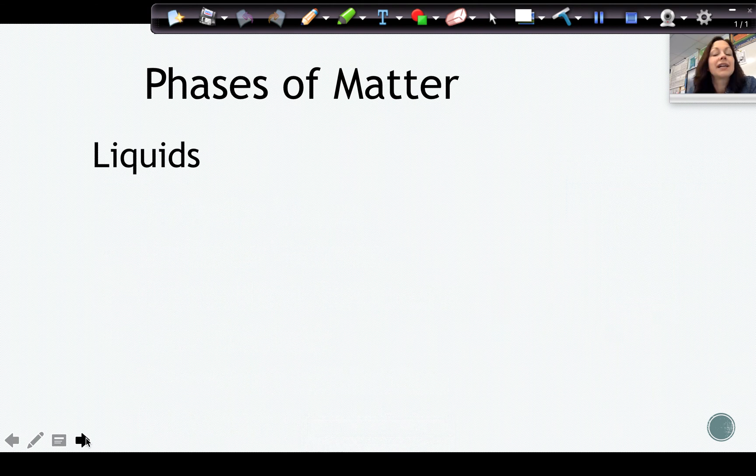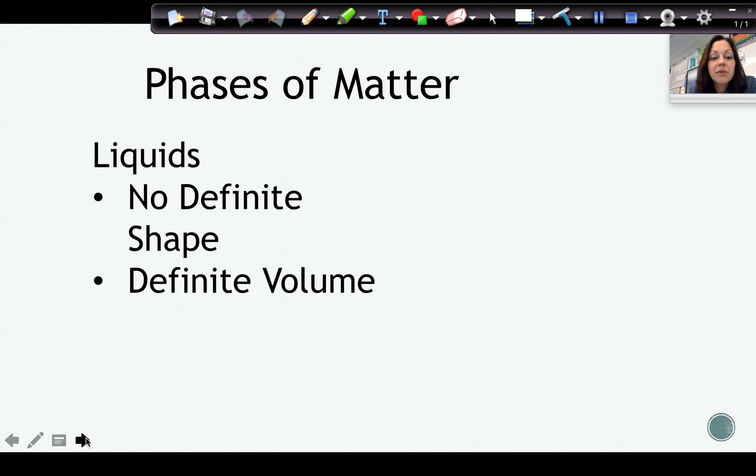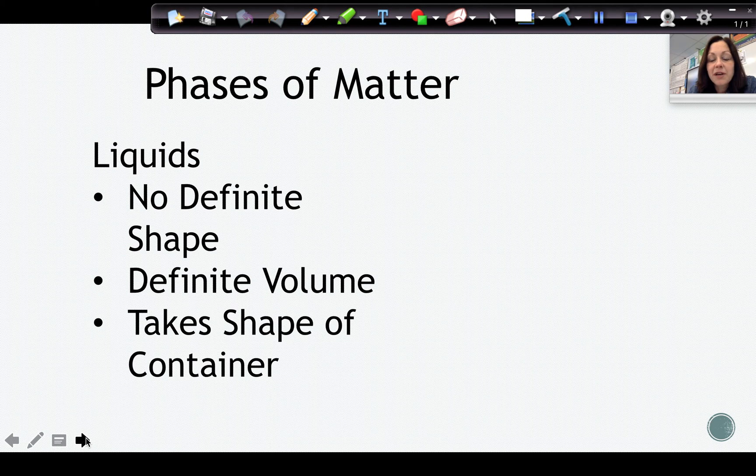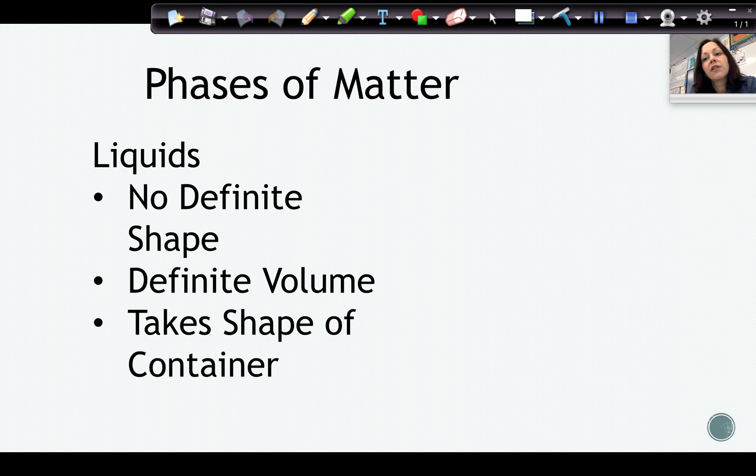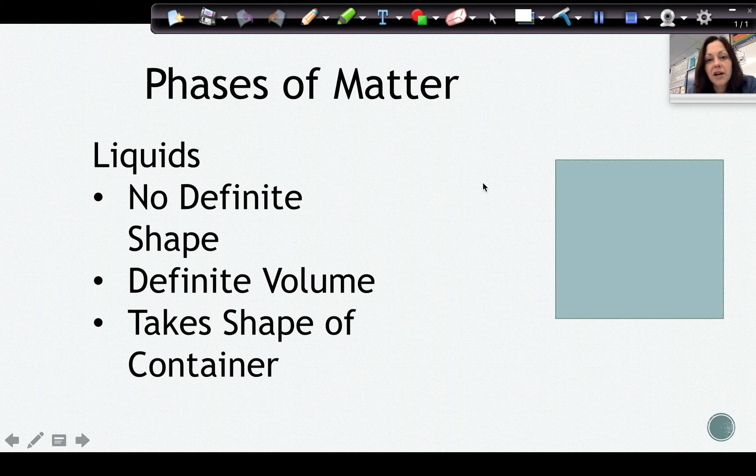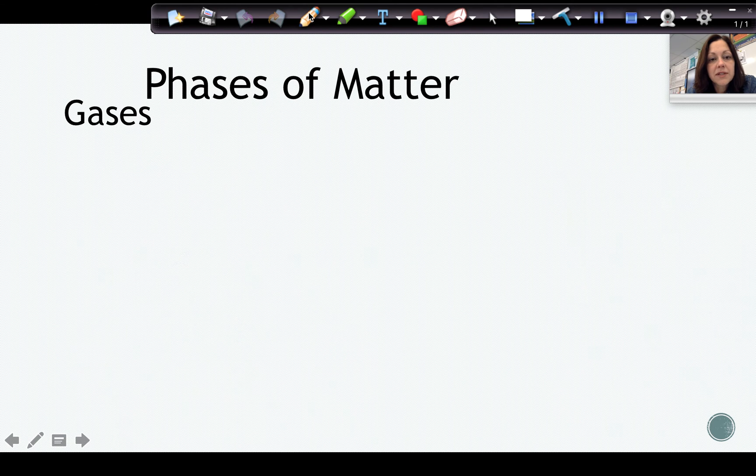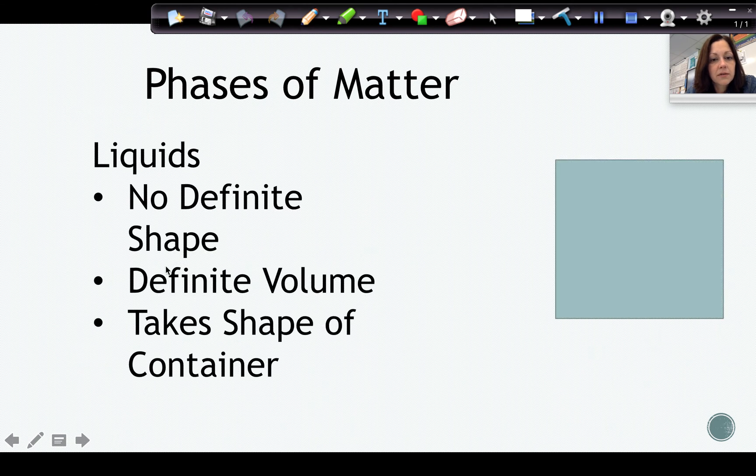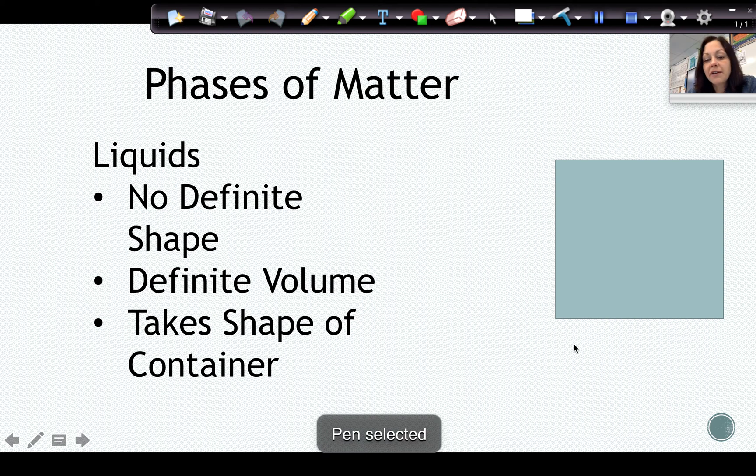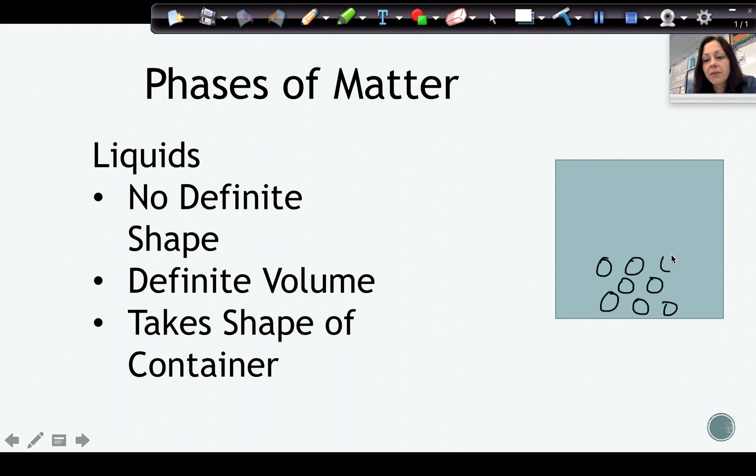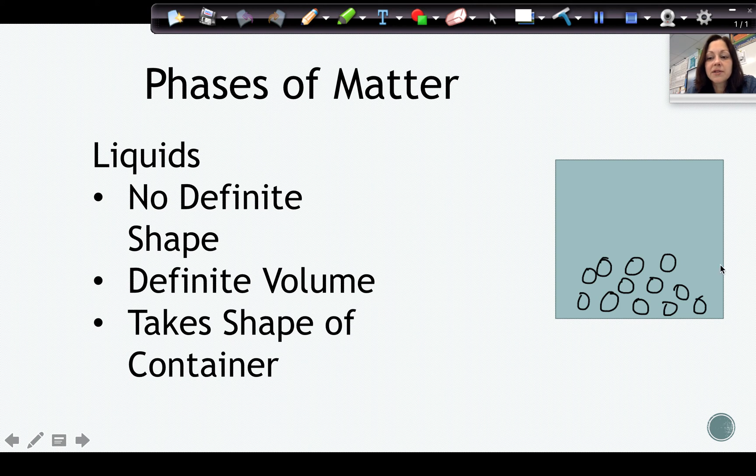We talk about liquids, we're talking about substances that have no definite shape because they'll take the shape of the container, but they do have a definite volume. If you have a round container, the liquid will form a round shape. If you have a square container, the liquid will form a square shape, and so on. If we wanted to draw a liquid, we're still going to draw the liquid kind of close together, but now instead of them being close together and in a regular pattern, they're close together and a little bit less organized. So this is how we would do a molecular level diagram for a liquid.